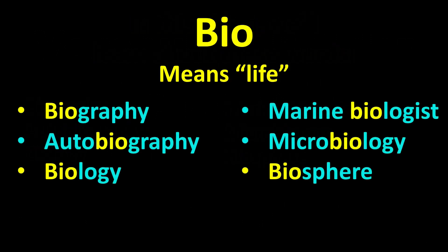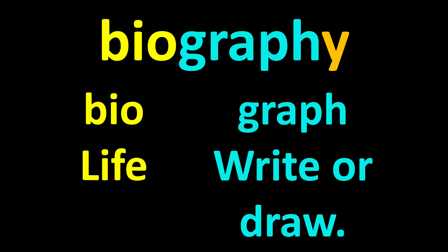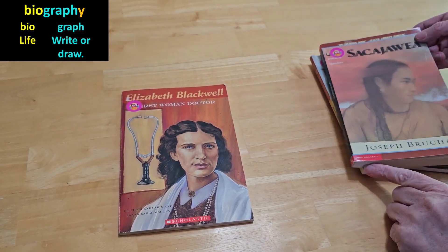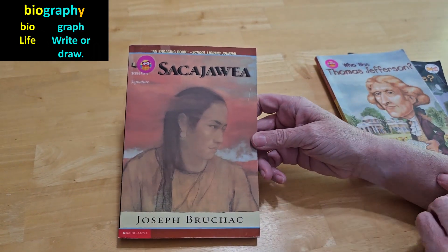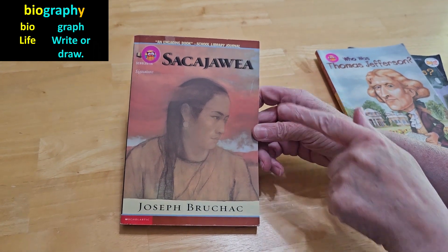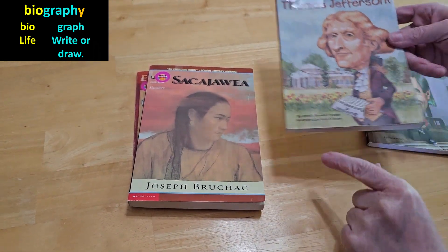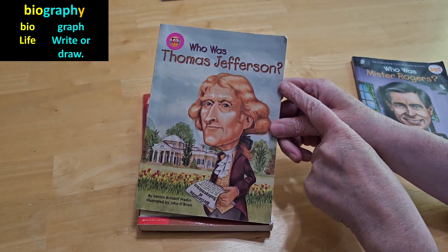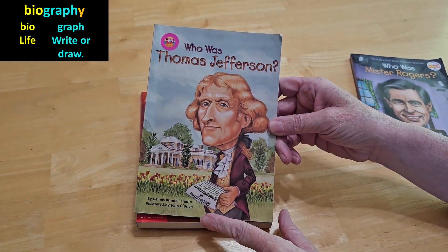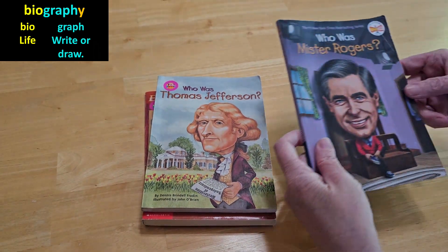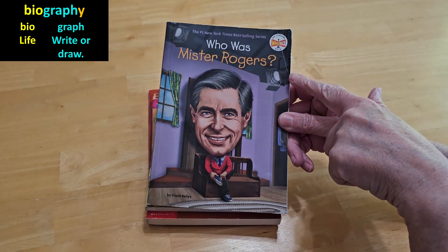The word root 'bio' means life. The word 'biography' is made of two parts — the second is 'graph,' which means to write or draw. A biography is a book about someone's life, written by an author who is not the subject of the biography. For example, in each of these books, the person who the book is about is different than the person who wrote the book. These books are non-fiction, which means their content is true. Some may be short and simple, but all are biographies.